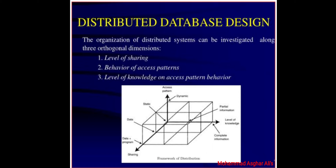Along the second dimension of access pattern behavior, it is possible to identify two alternatives. The access pattern of user requests may be static, so that they do not change over time, or dynamic. It is considerably easier to plan for and manage the static environment than would be the case for a dynamic distributed system. Unfortunately, it is difficult to find many real-life distributed applications that would be classified as static.